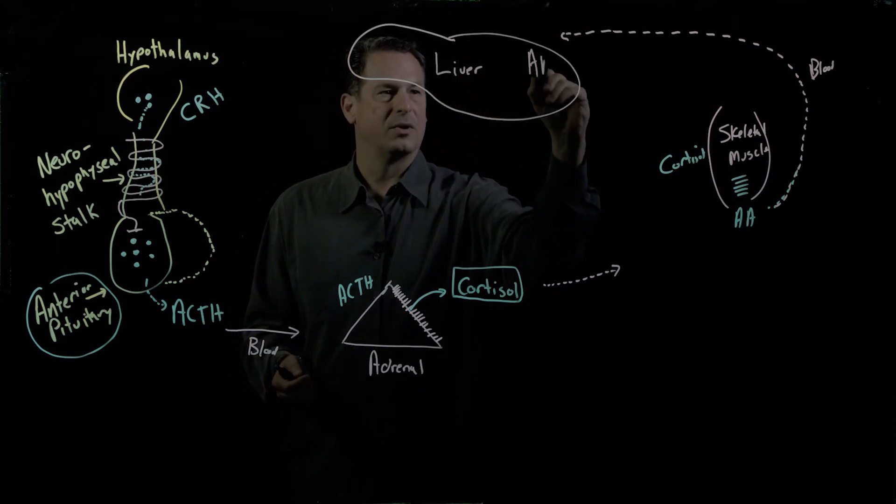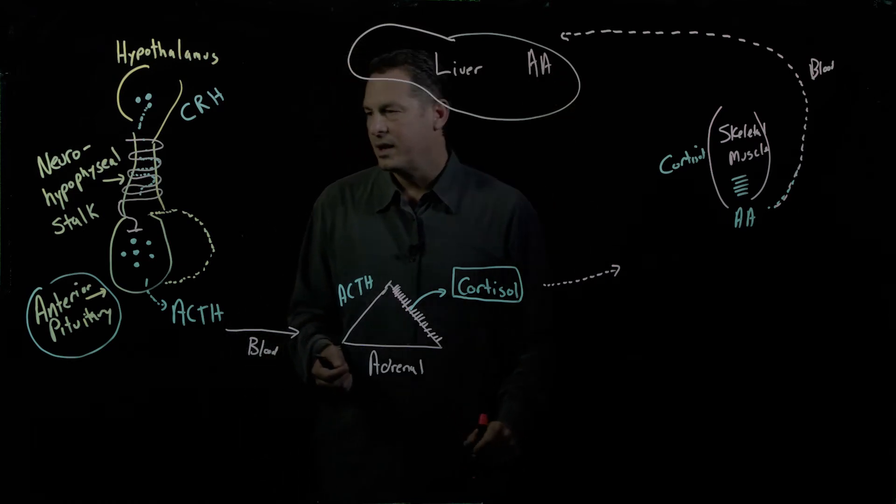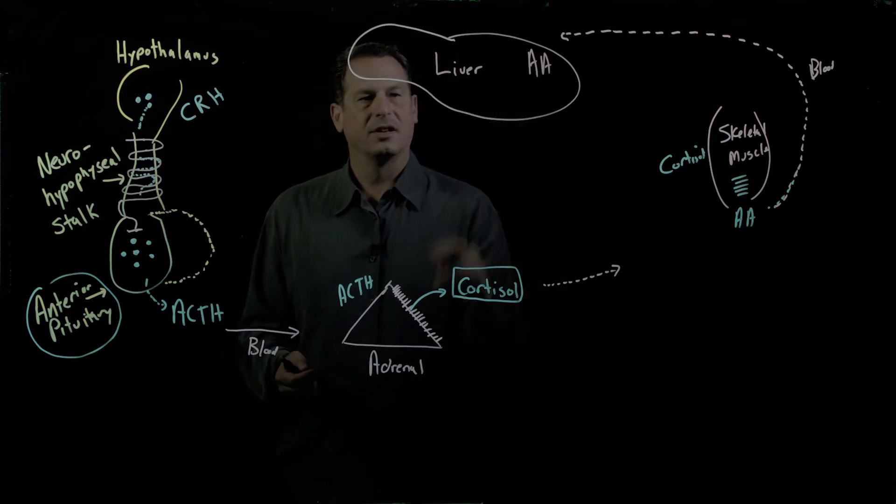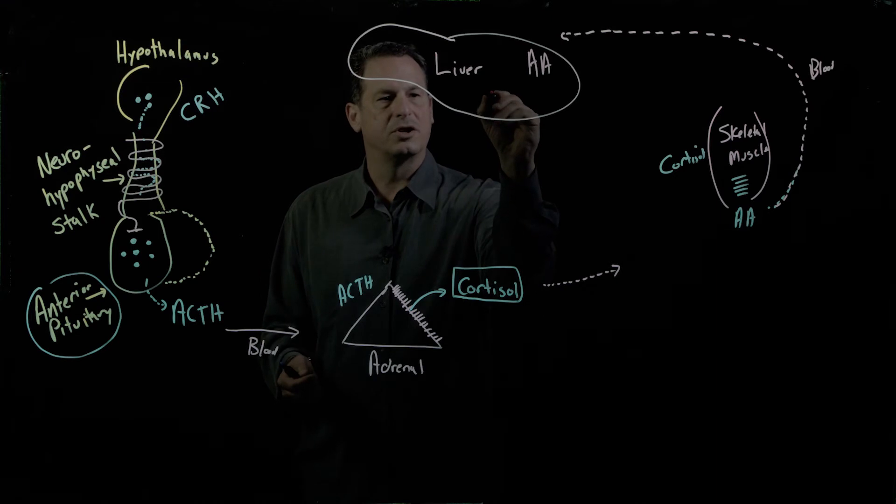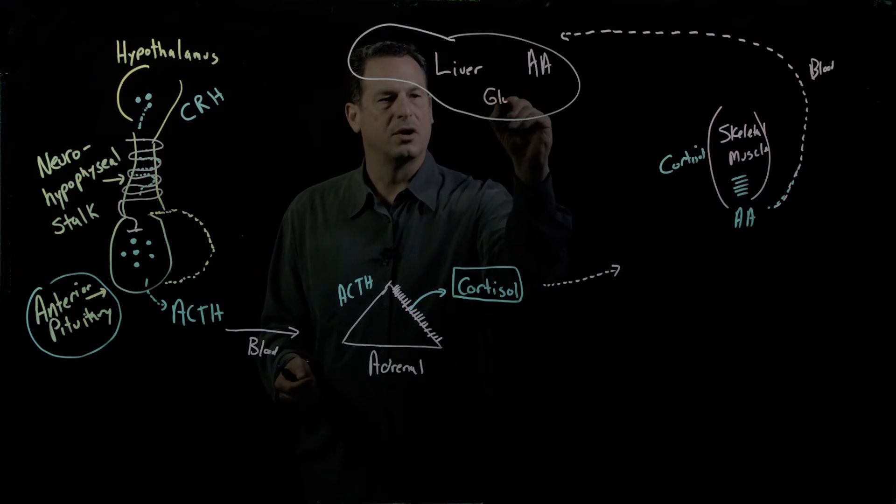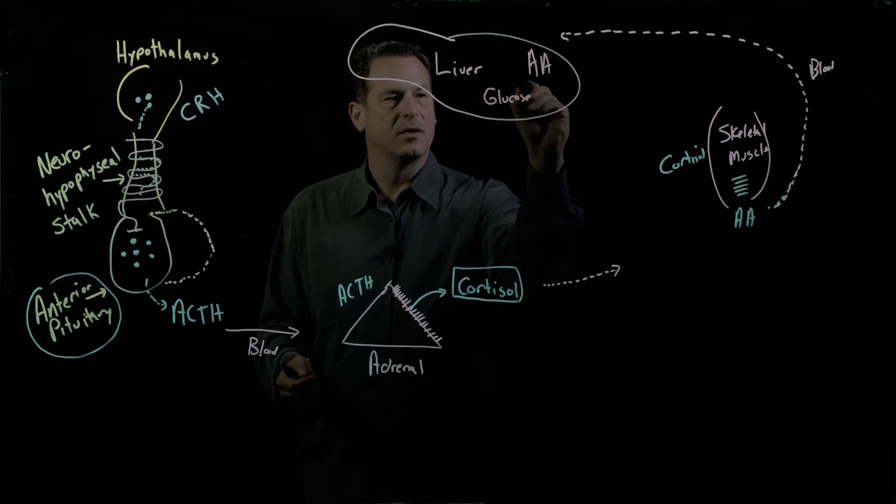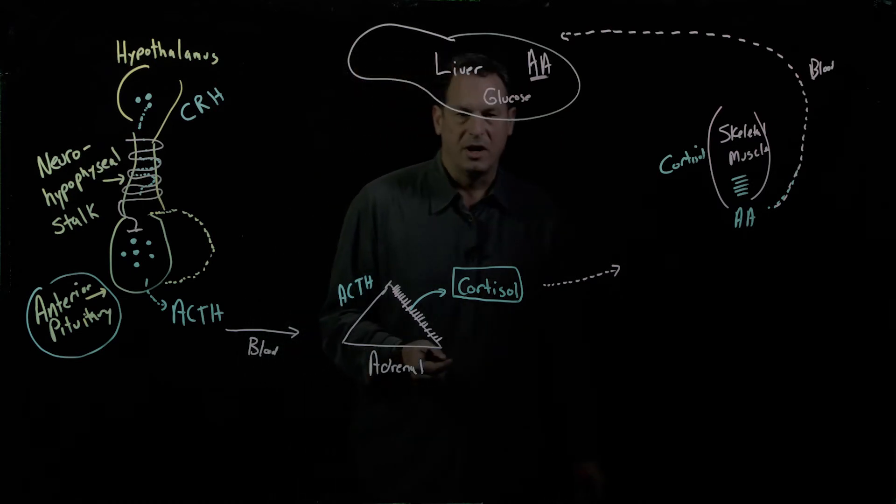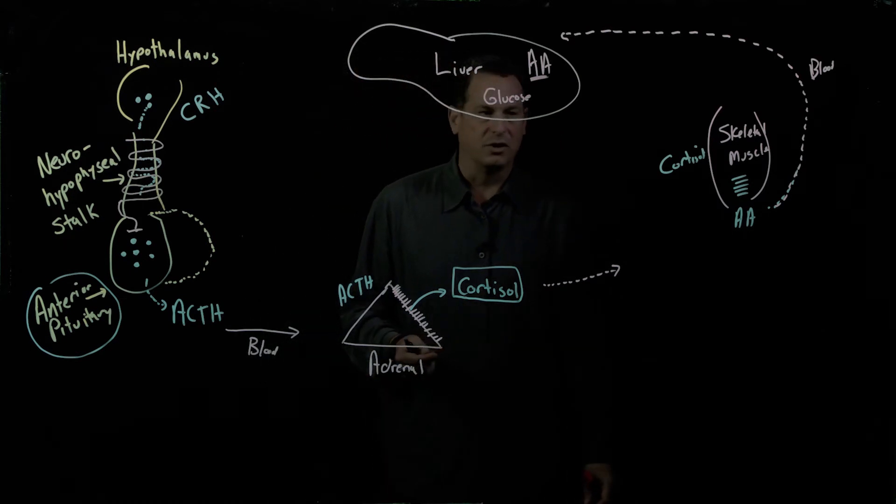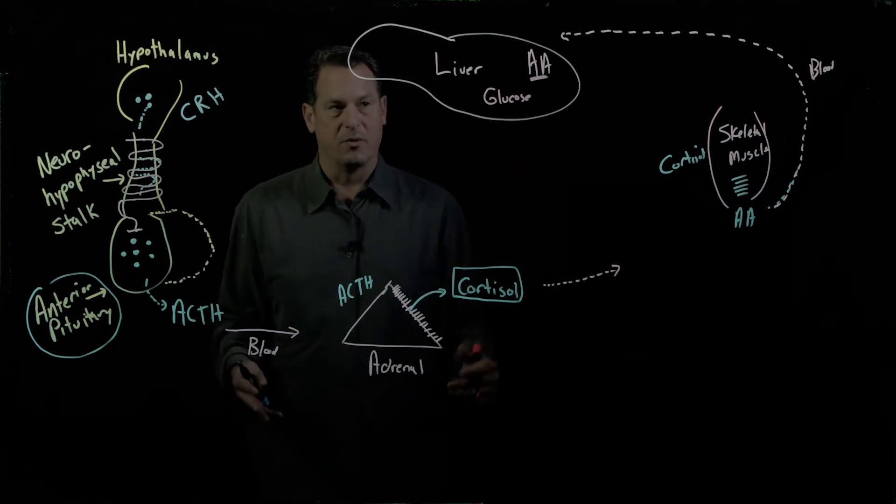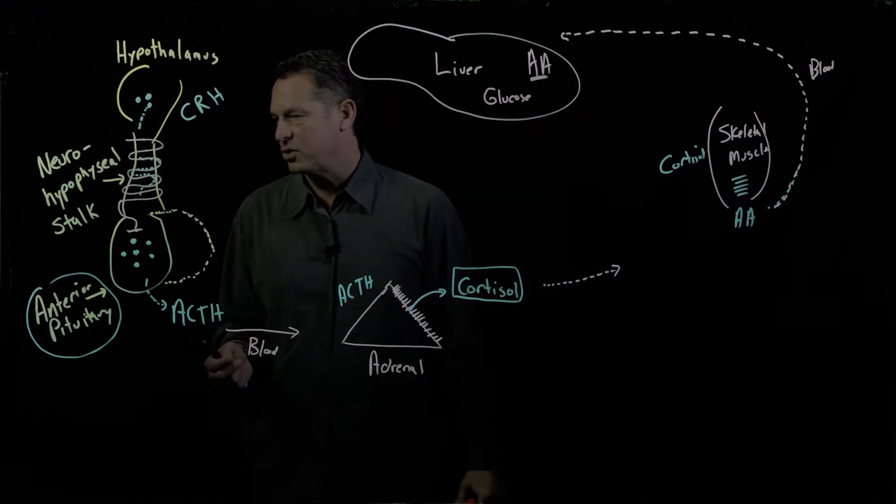And those amino acids will enter into the liver and they will cause the liver to start to produce more glucose from those amino acids. That's a process called gluconeogenesis, new glucose formation from a non-carbohydrate source.